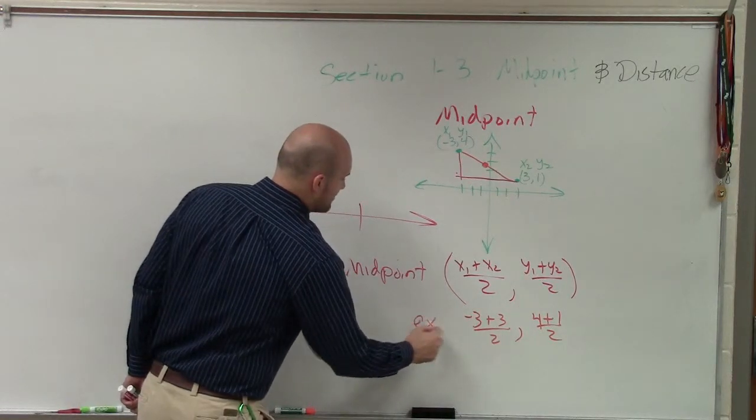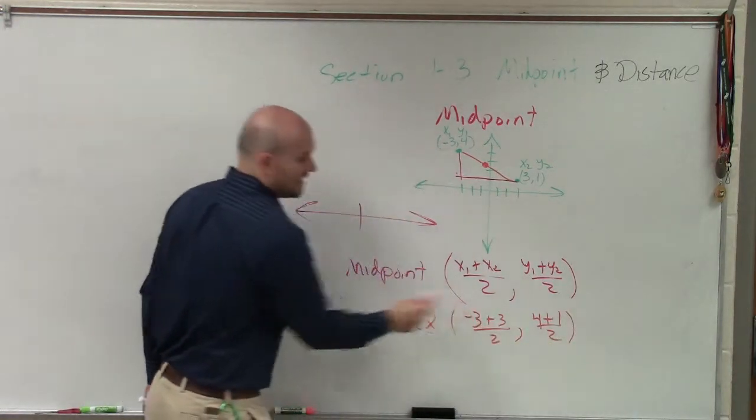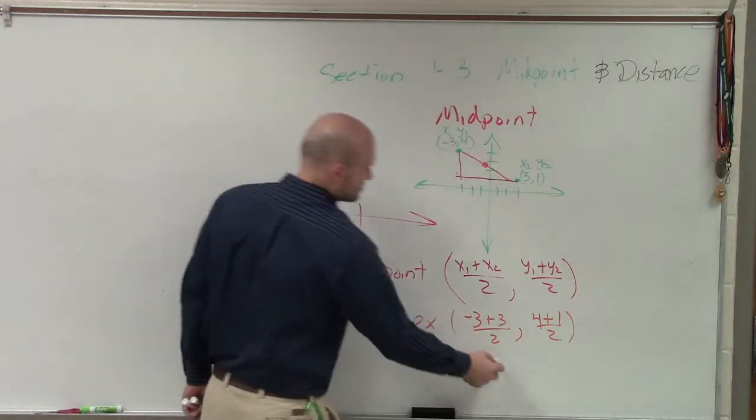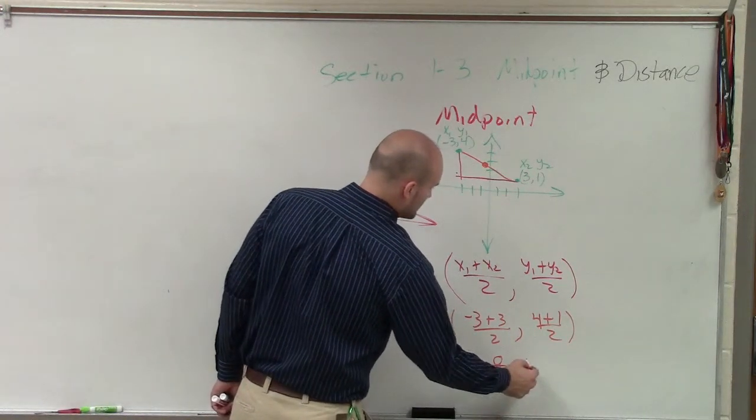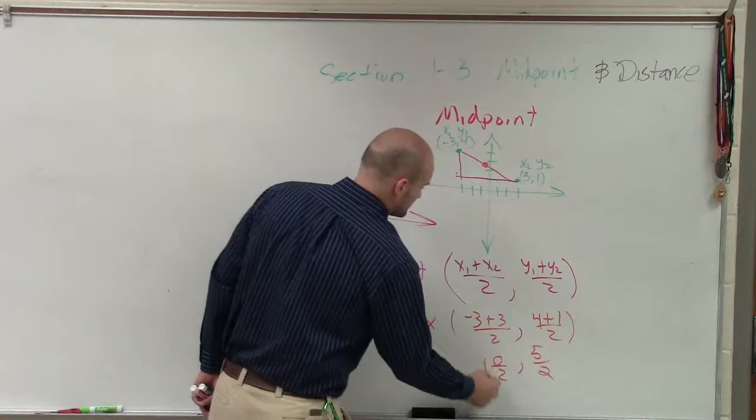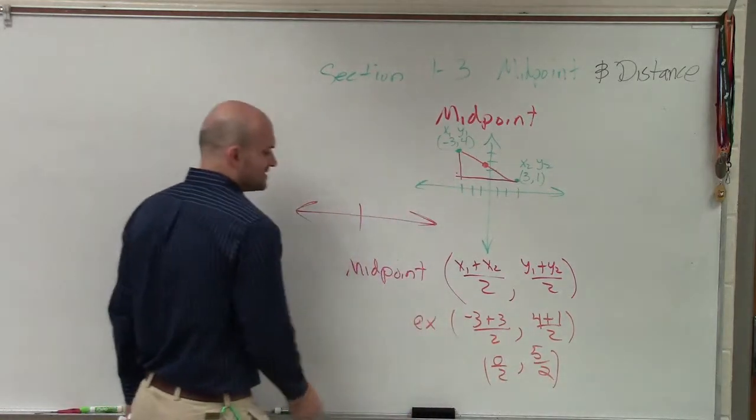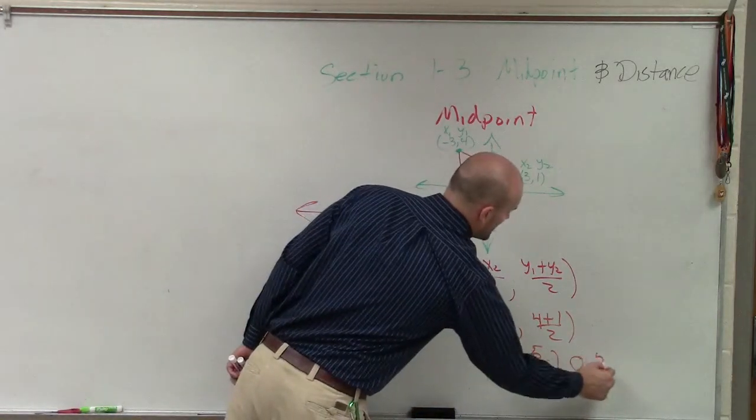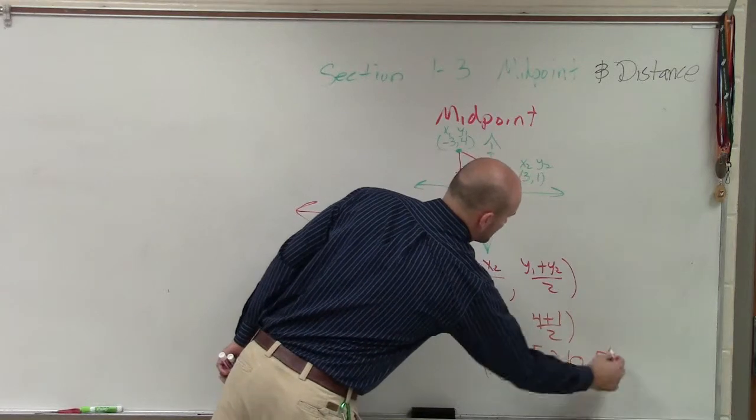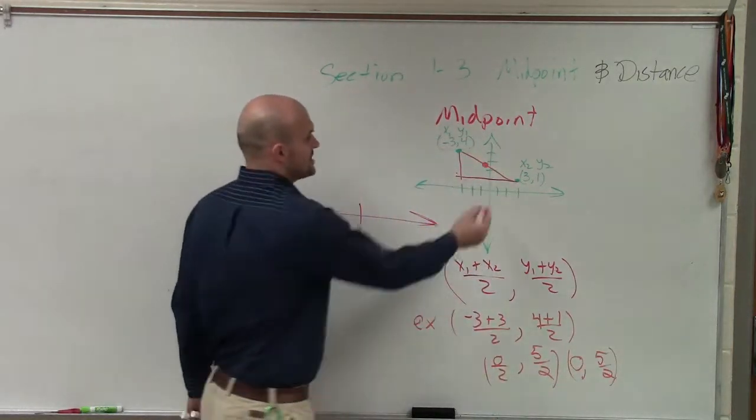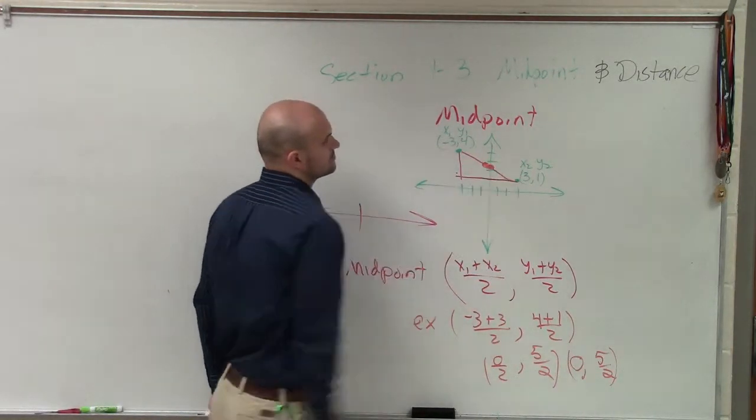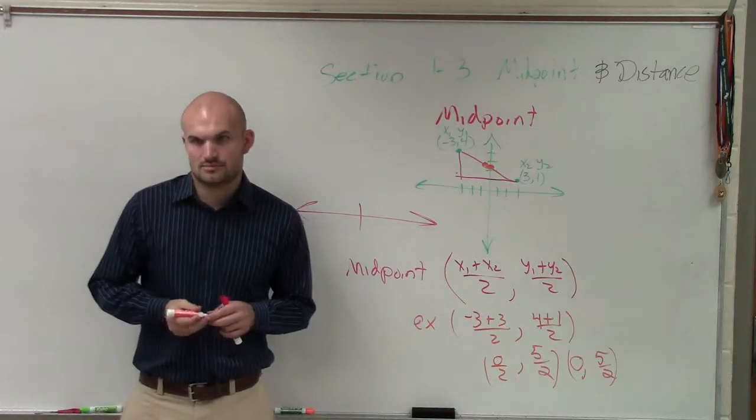So, therefore, the midpoint in my example, negative three plus three is zero, so it would be zero over two, comma, five over two. So, the final answer is just going to be zero, comma, five over two, which is actually right there. Does that look about right? Yes.